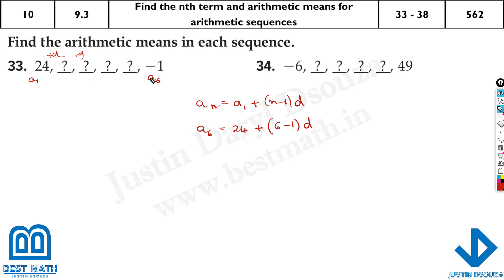You can understand that d value is minus. Why? Because the numbers are reducing. Here, whereas it's increasing, so it should be plus. But we need the value exactly. So how we do is, a_6, this much is done. Now what is a_6 exactly? Minus 1. That is equal to 24 plus, how much is this? 6 minus 1 is 5, 5 times d.